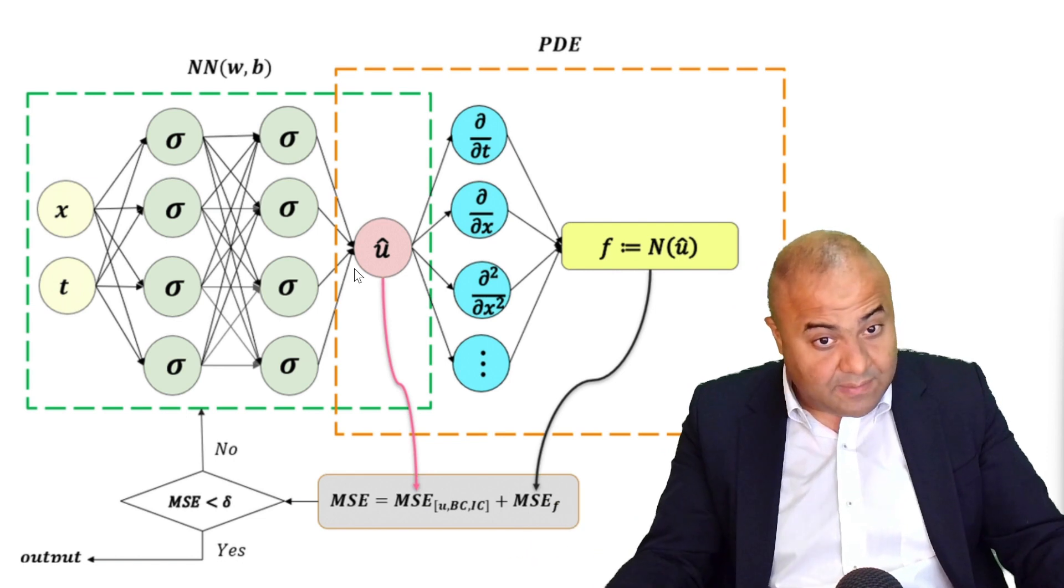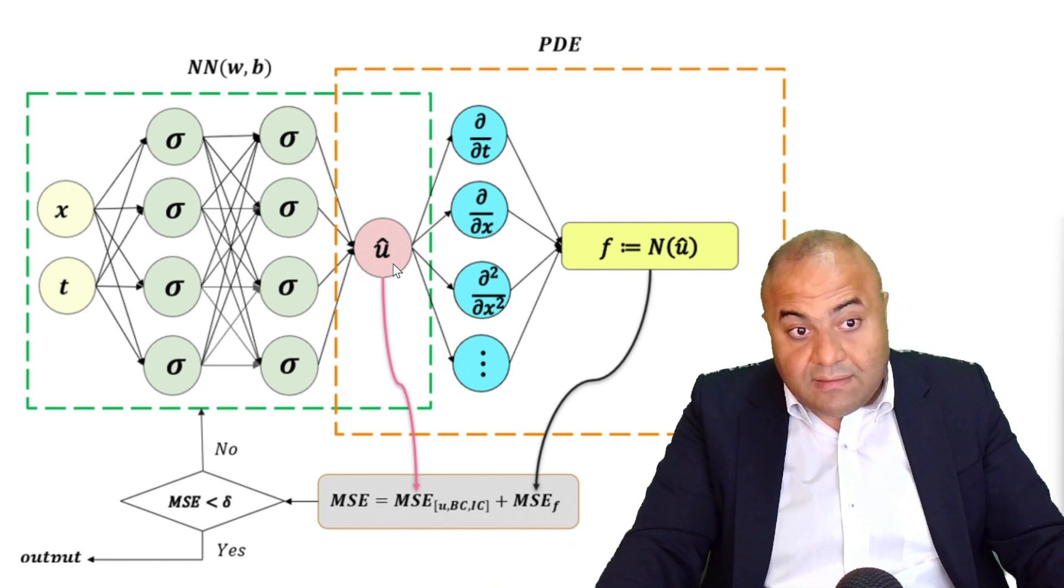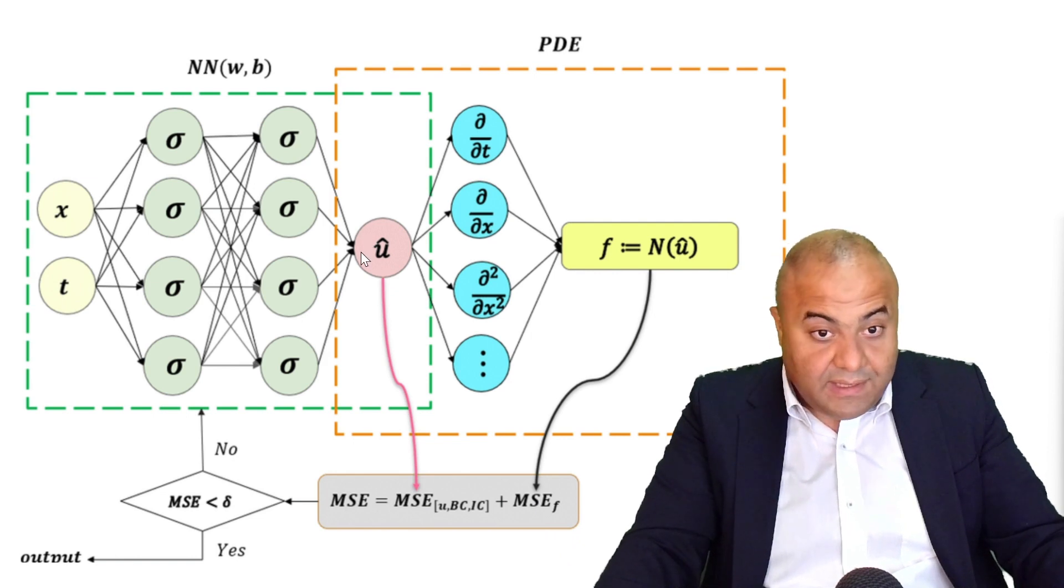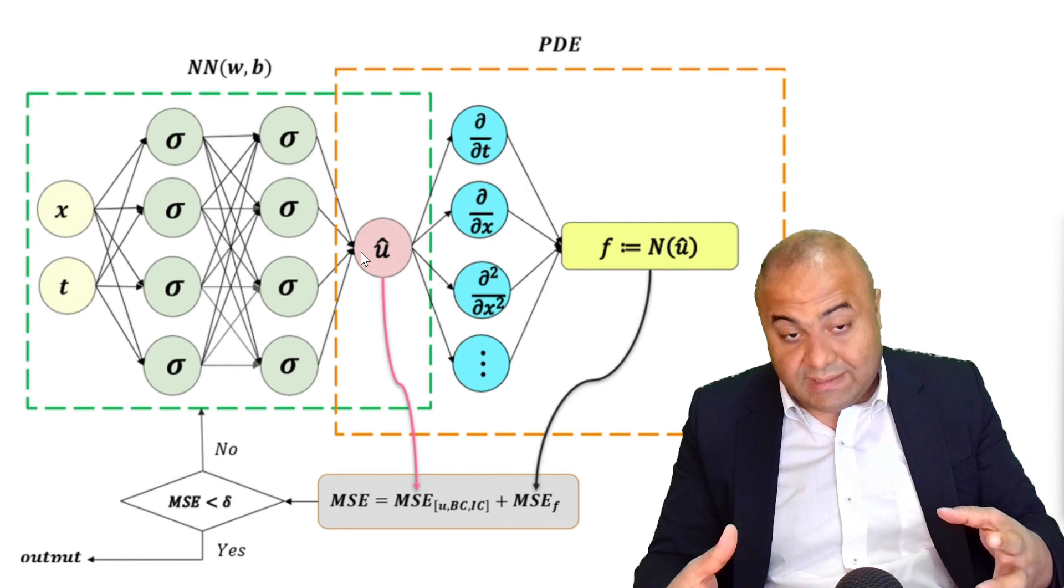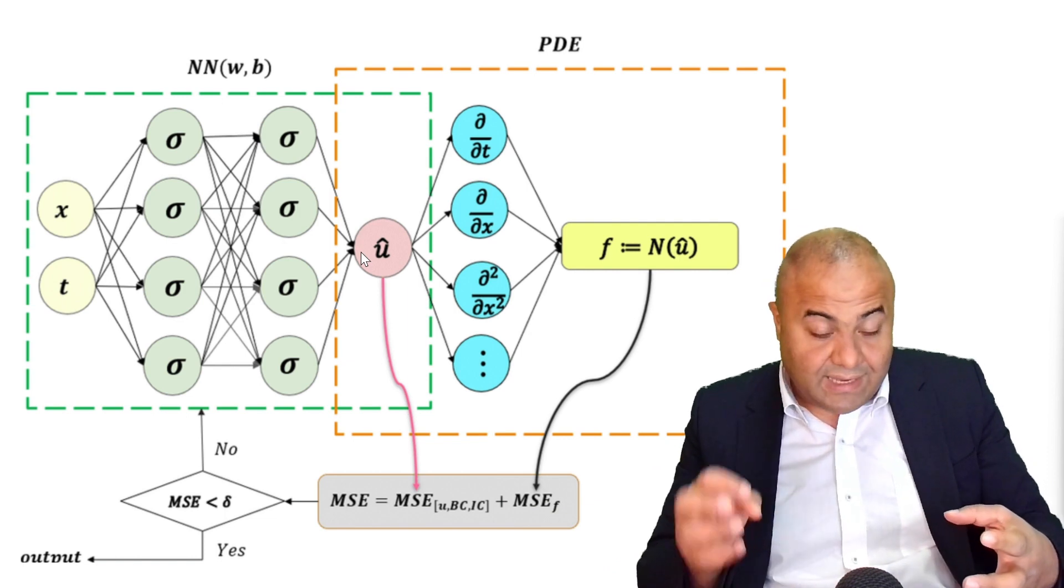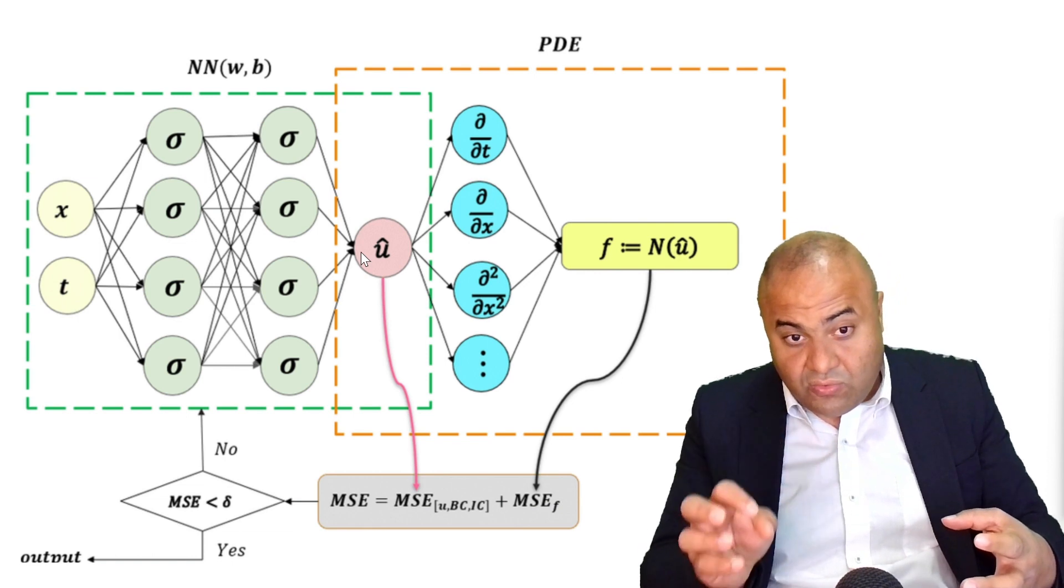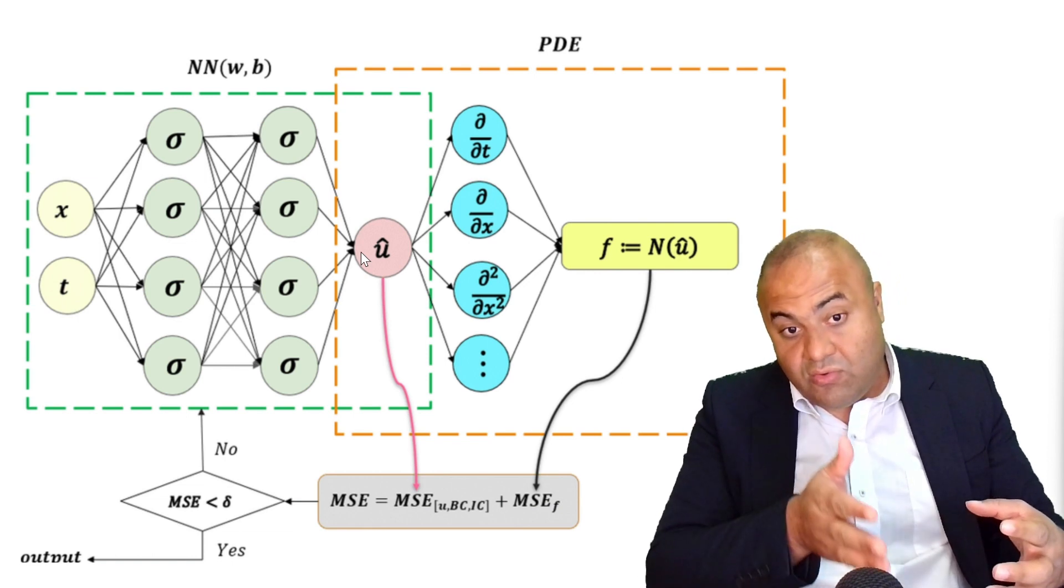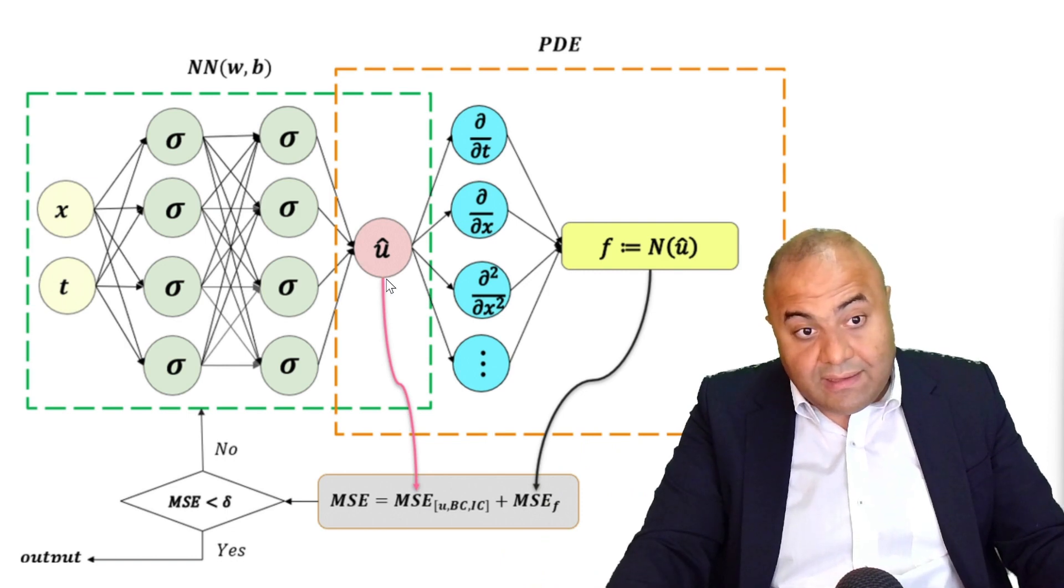which in our case is the temperature, or u. This u will be compared with the data if we have the actual result. If we don't have this exact u, what we will compare is u from the neural network with the initial value of u.